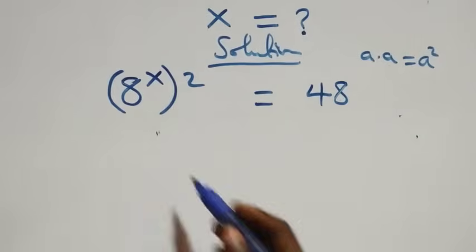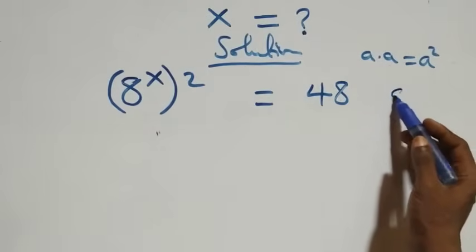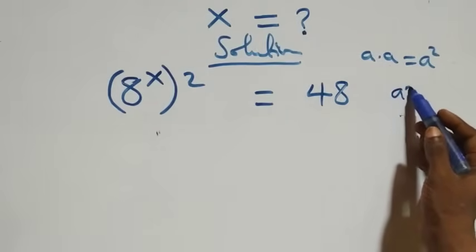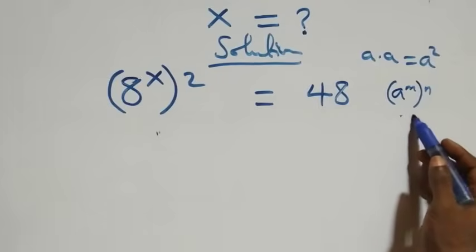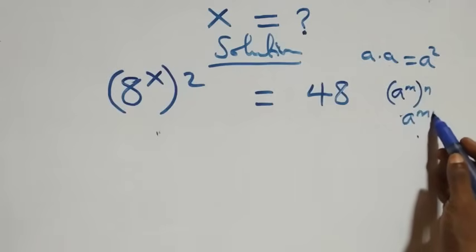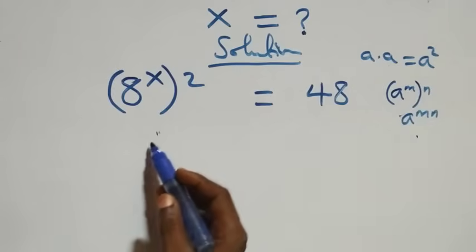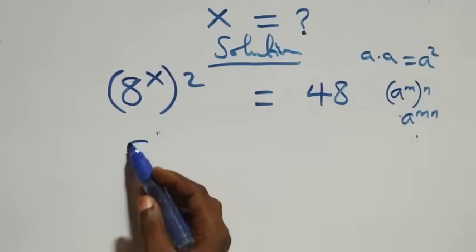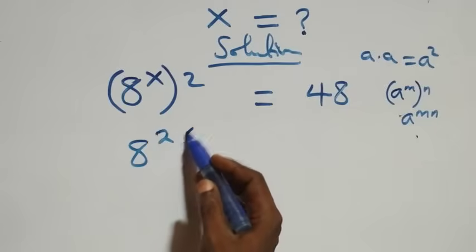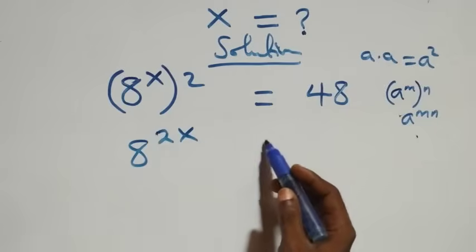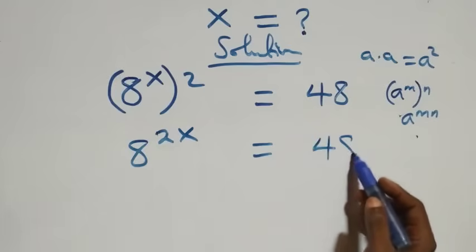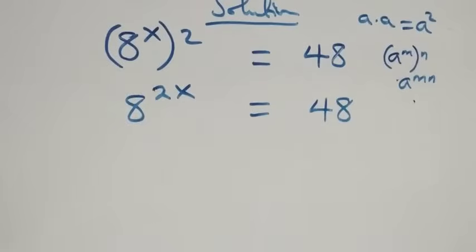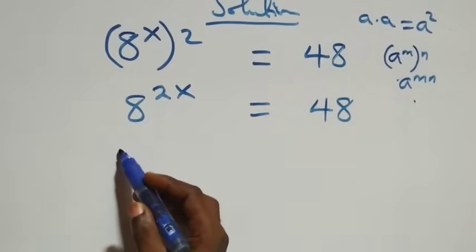This follows the law of indices: a raised to power m, raised to power n, can be written as a raised to power m·n — that is, the powers multiply. So we have 8 raised to power 2x equals 48.